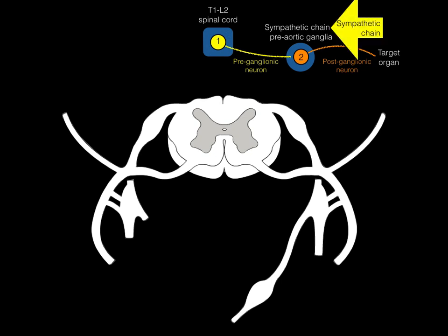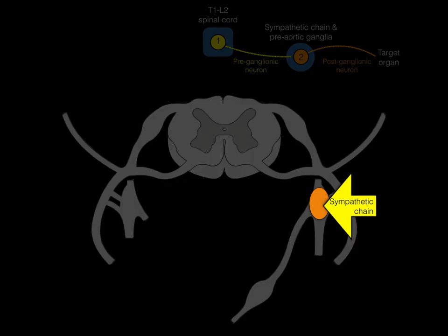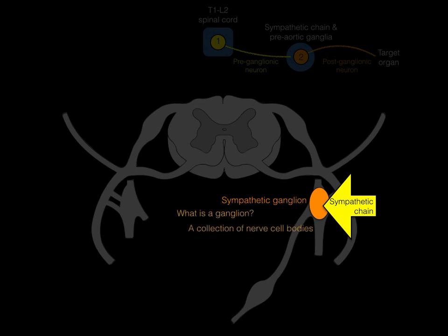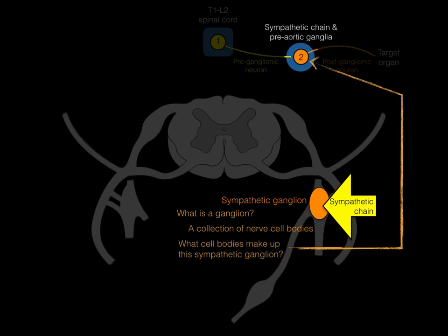The sympathetic chain is shown in this illustration with a sympathetic ganglion. A ganglion is a collection of nerve cell bodies. The cell bodies that make up the sympathetic ganglia are the cell bodies of the postganglionic sympathetic neurons.